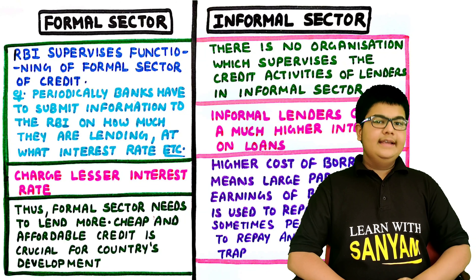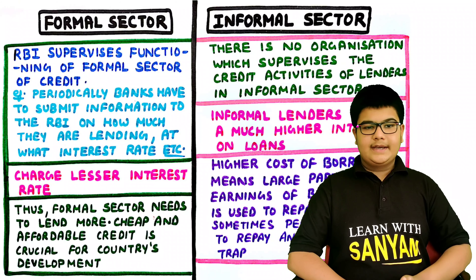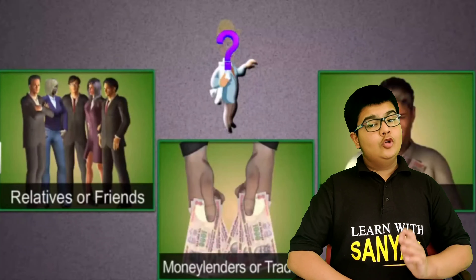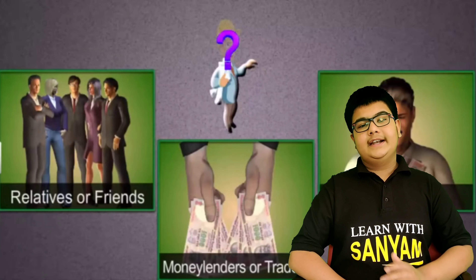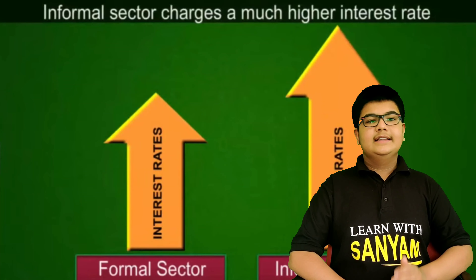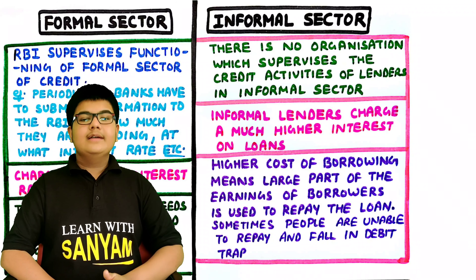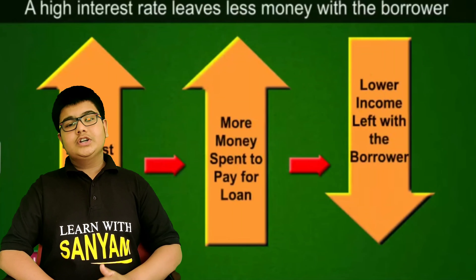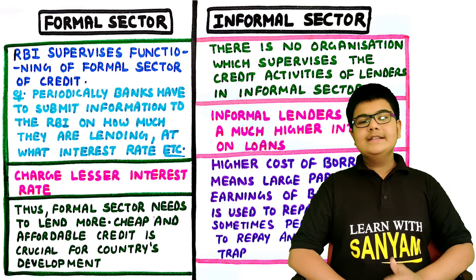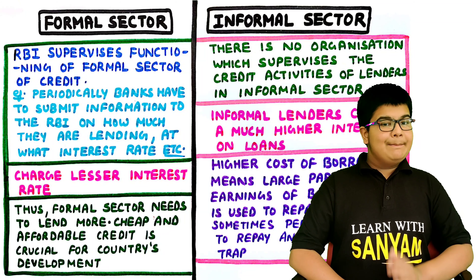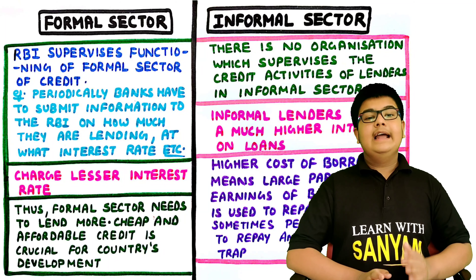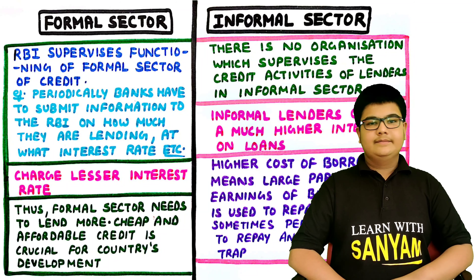Periodically, banks have to submit information to the RBI on how much they are lending, at what interest rate, etc. While in the informal sector, there is no organization supervising the credit activities of lenders. Informal lenders charge a much higher interest rate than the formal sector. The higher cost of borrowing means a large part of the borrower's earnings is used to repay the loan. Sometimes people are unable to repay and fall into a debt trap. Thus, the formal sector needs to lend more, as cheap and affordable credit is crucial for the country's development.